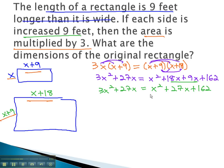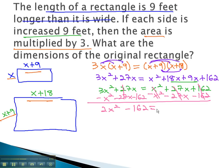Because the x squared is larger on the left side, let's move everything to the left, keeping the x squared positive. We'll subtract x squared, subtract 27x, and subtract 162 from both sides. When we do, we end up with 2x squared minus 162 equals 0.